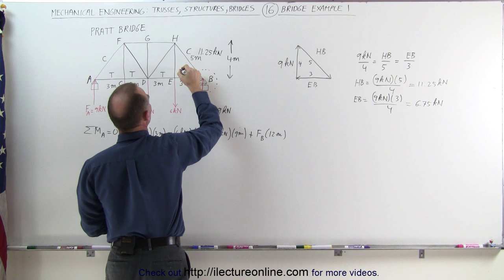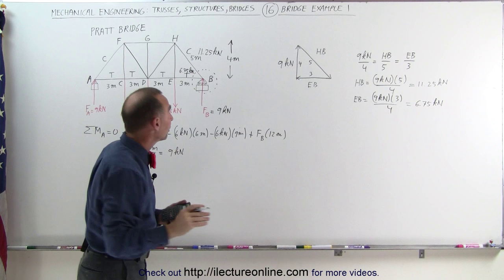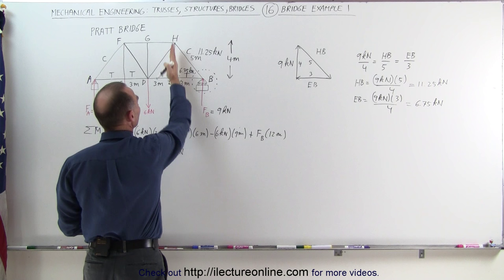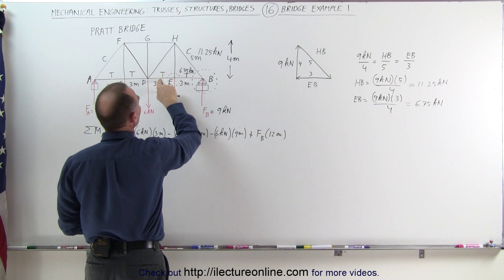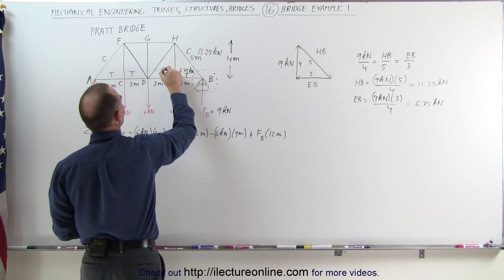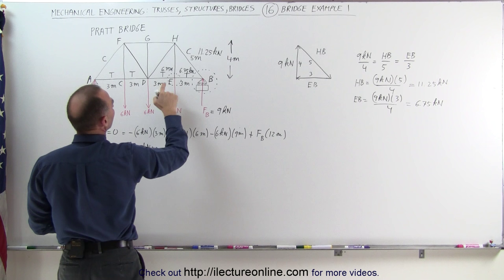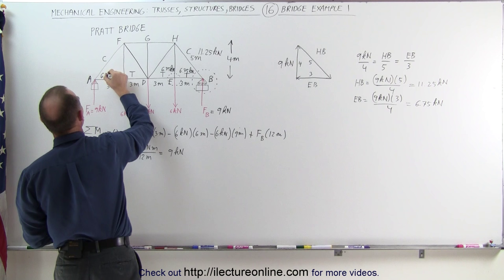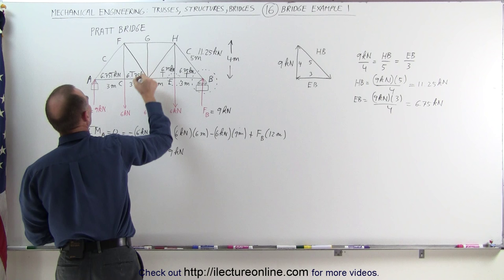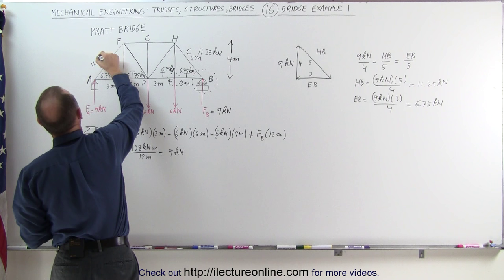Member EB is 6.75 kilonewtons. Taking a look at the next joint, we only have two forces in the vertical direction and two in the horizontal direction, so this force must equal this force — meaning we have 6.75 kilonewtons here. Due to perfect symmetry, we also have 6.75 kilonewton forces on the corresponding members on the other side, and also an 11.25 kilonewton force in that matching top member.